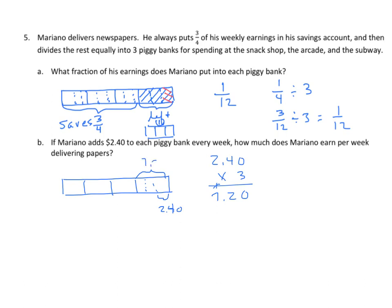So, we now know that this is $7.20. We need to find out what four of those are. So, $7.20 times four. Four times zero is zero. Four times two is eight. And four times seven is 28. And we put the decimal place in the appropriate place. And the answer is $28.80.